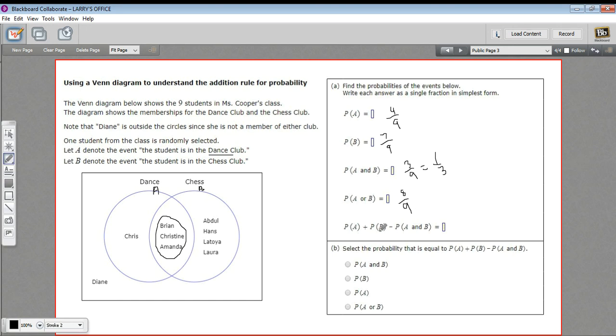And then we have this formula down here. And this is actually the addition rule for probability. So the probability of A plus the probability of B minus the probability of A and B equals something. And we're supposed to figure out what that is.